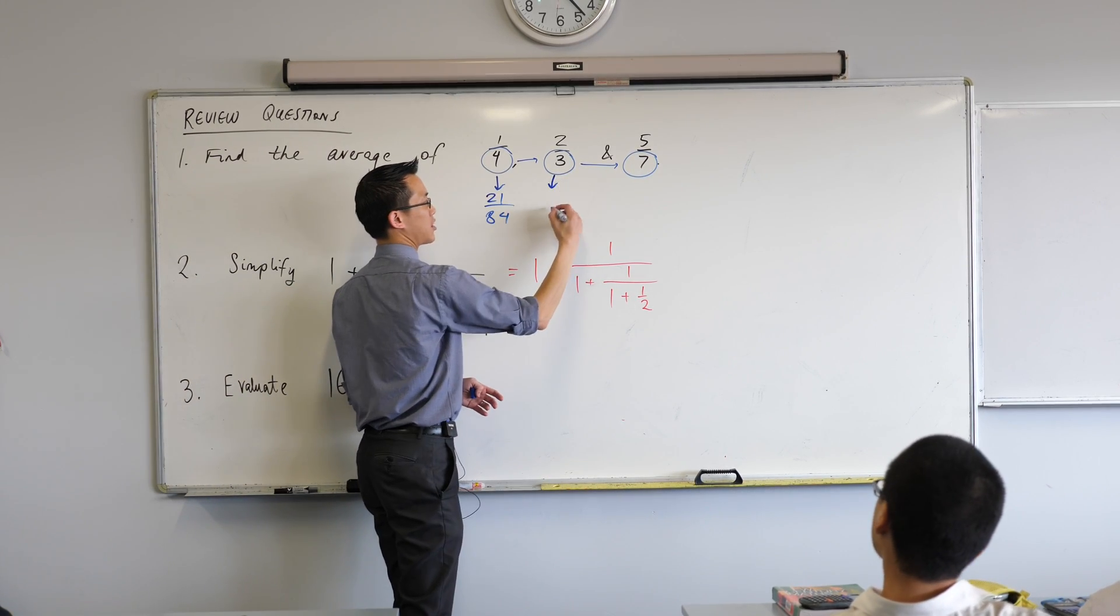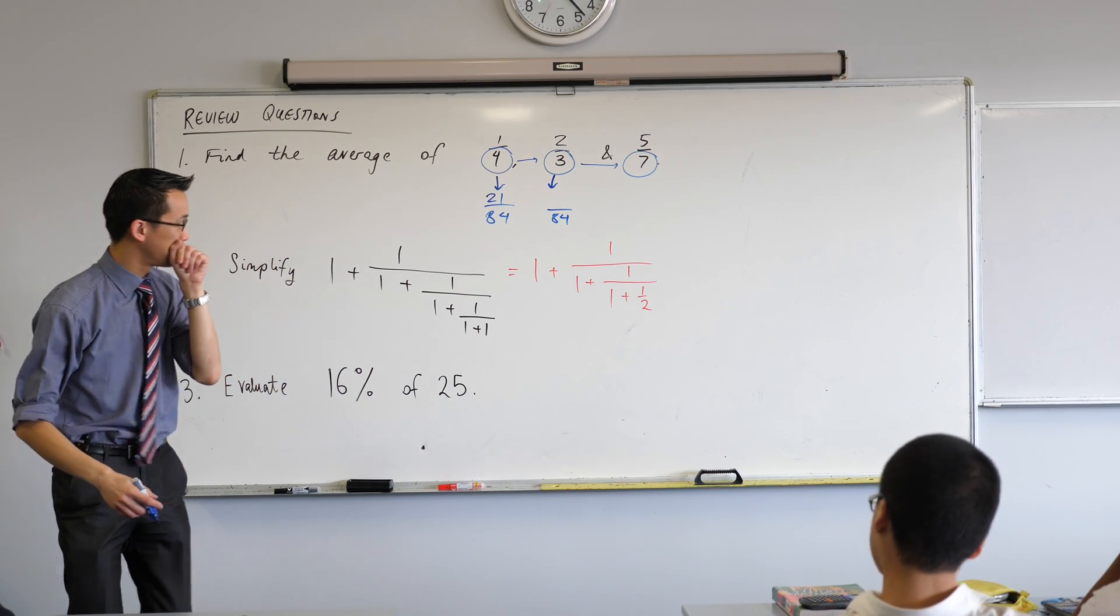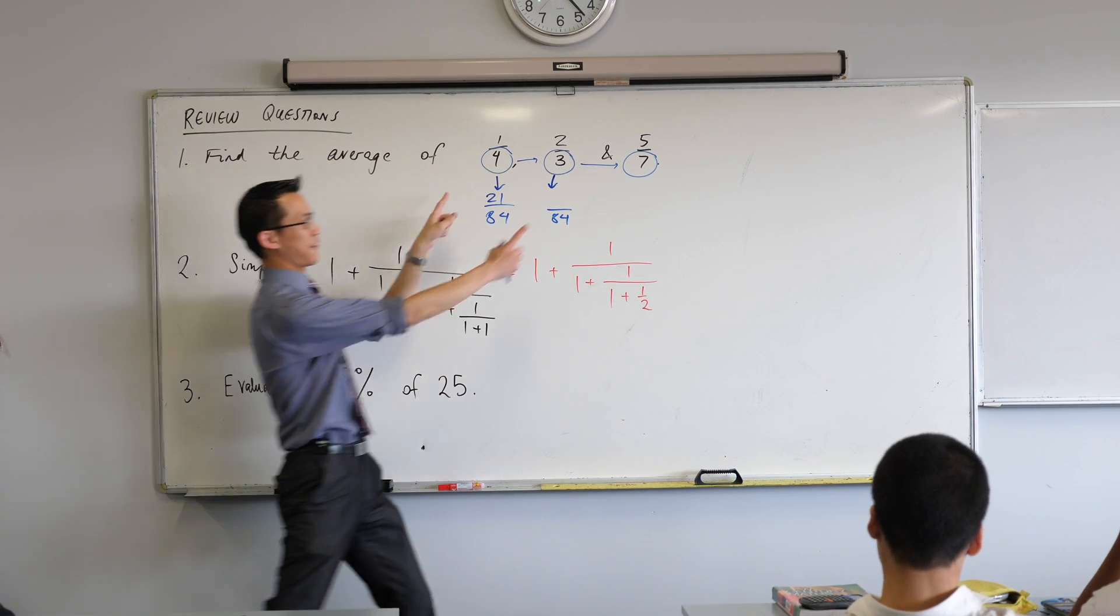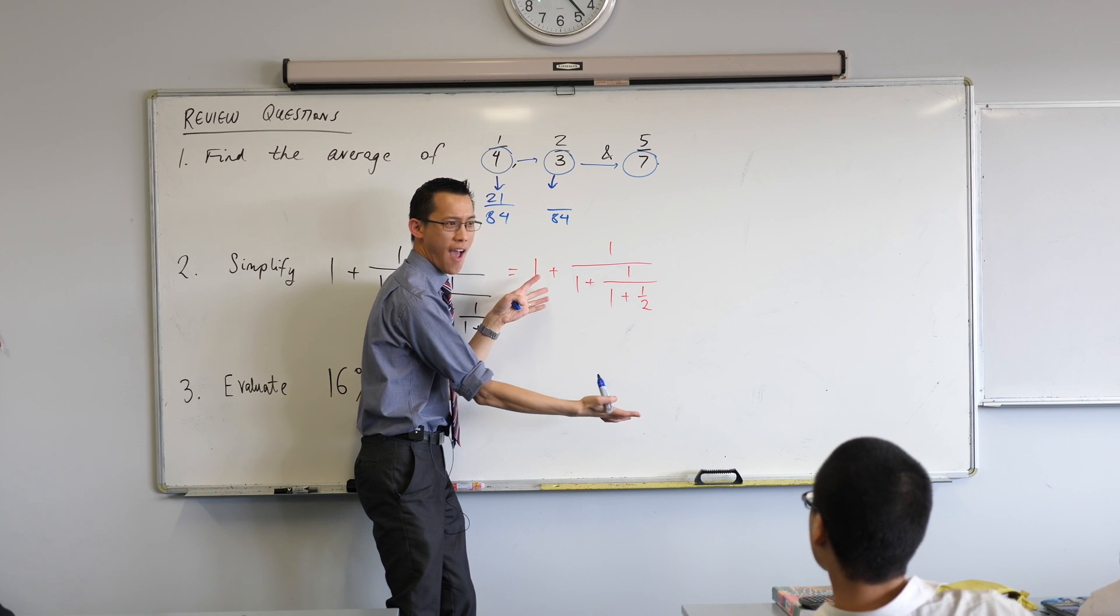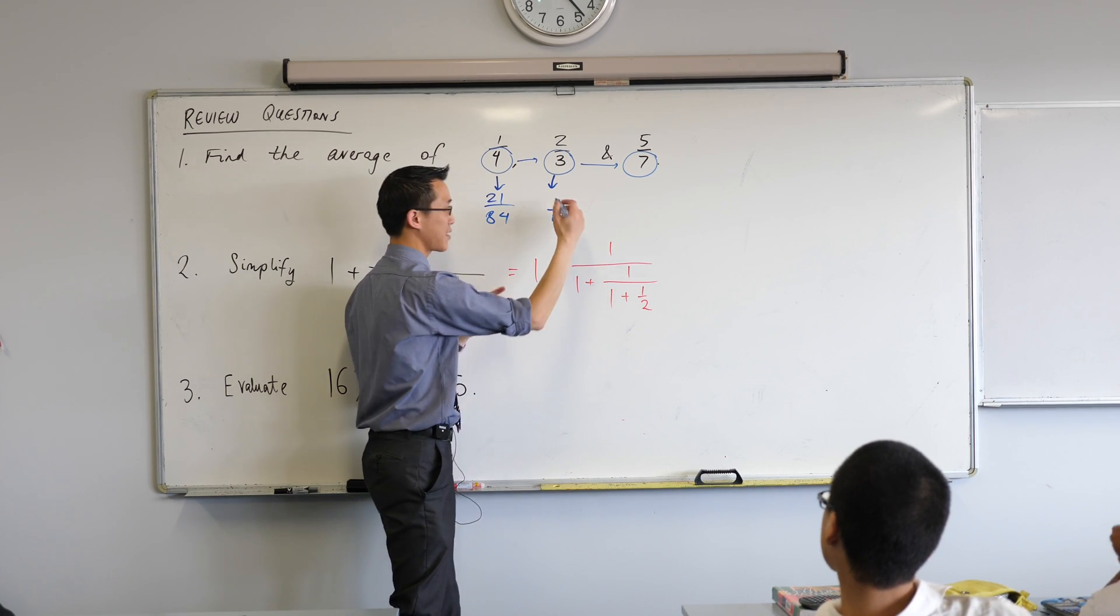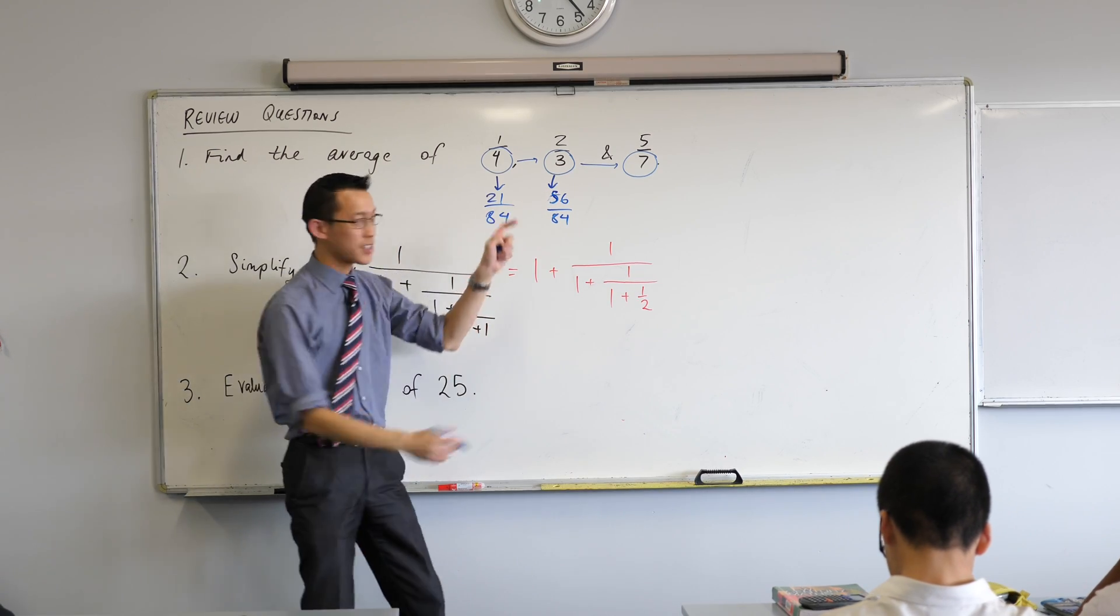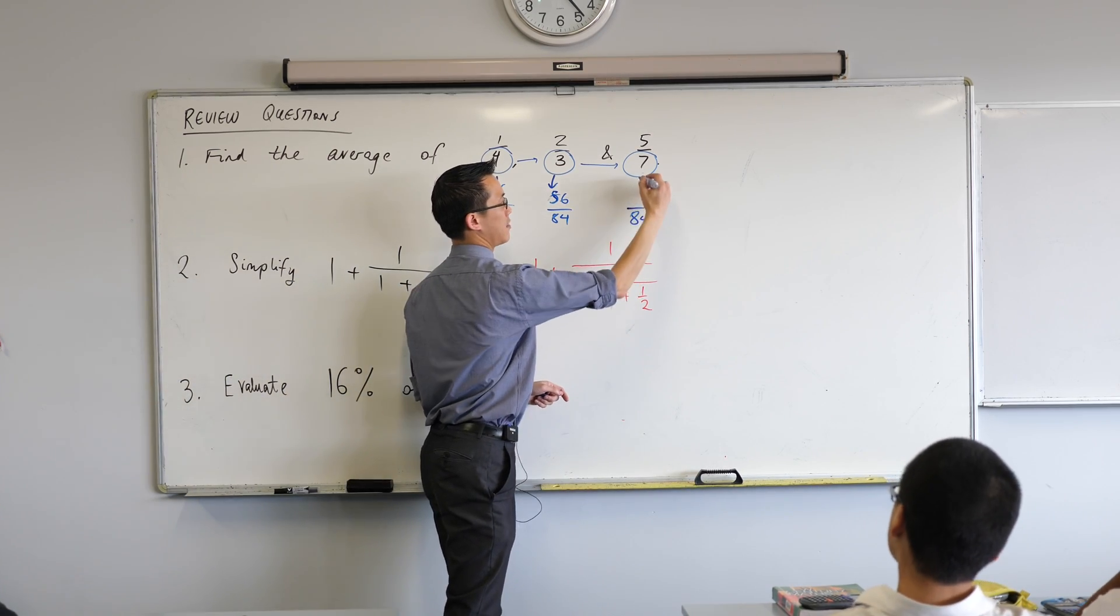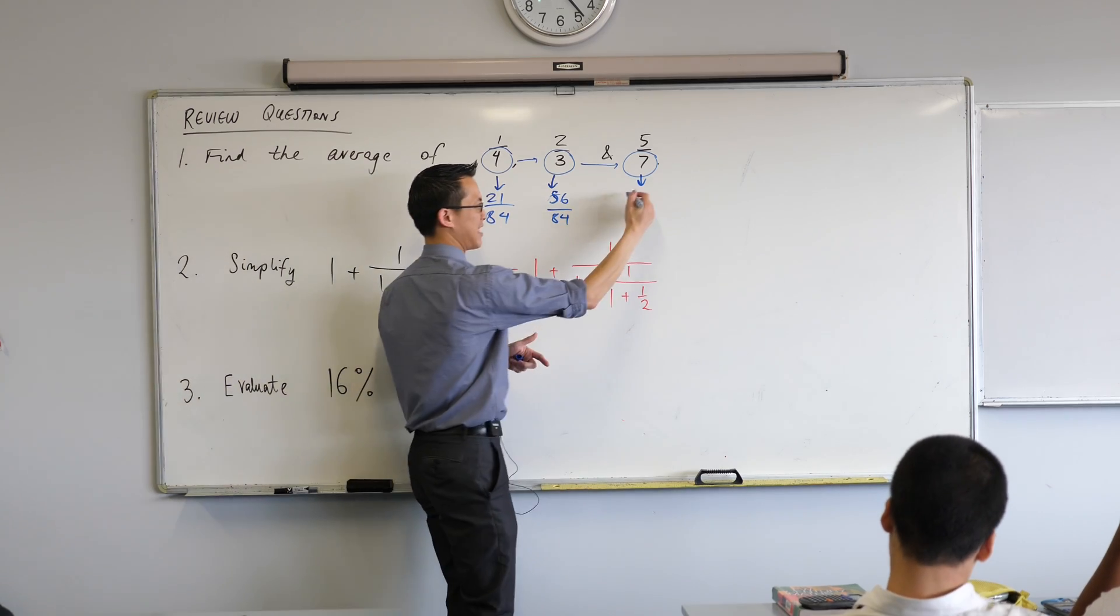I want this one to be over 84 as well. What do I multiply the top and the bottom by? 28, which I get from the two denominators. What is 2 times 28? 56. 56, that's very messy. And then the last one, to get that over 84, what do I multiply by? 12, right. 5 times 12? 60.